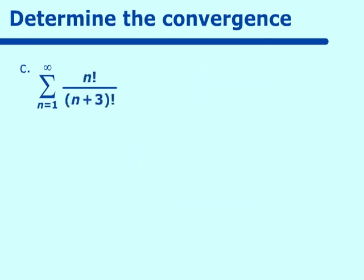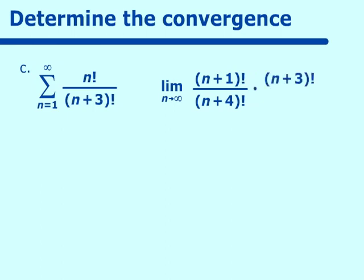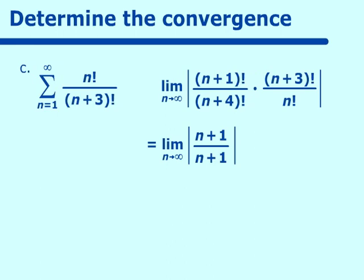Now consider n! over (n+3)!. The limit as n approaches infinity of (n+1)! over (n+4)! times (n+3)! over n! simplifies: (n+1)!/n! is n+1, and (n+3)!/(n+4)! is also 1/(n+1). So the limit equals 1, meaning the ratio test tells us nothing about convergence or divergence.